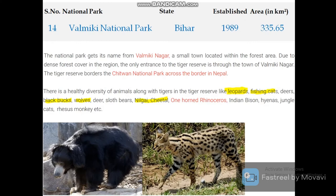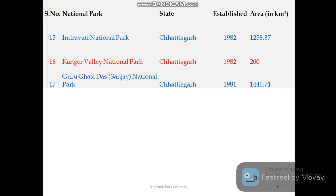Bihar has only one national park — Valmiki National Park. It is home to leopards, fishing cats, black bears, wolves, nilgai, chital, and one-horned rhinos. This park has its border connected with Chitwan National Park of Nepal, and sometimes animals, including single-horned rhinos, migrate from Chitwan into Valmiki.